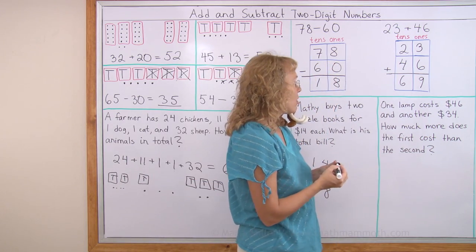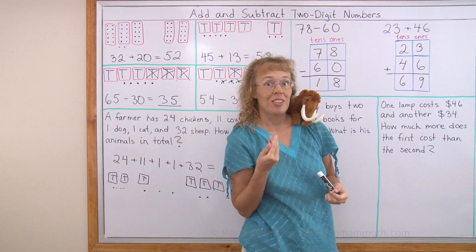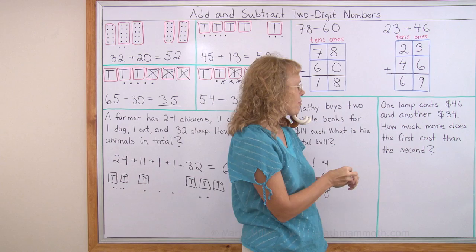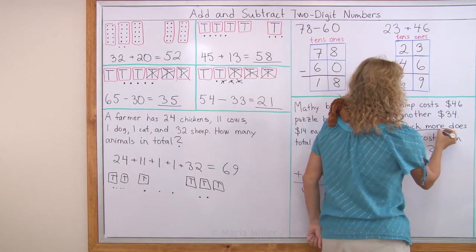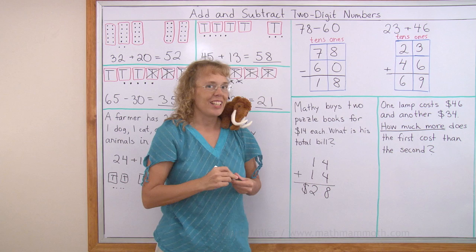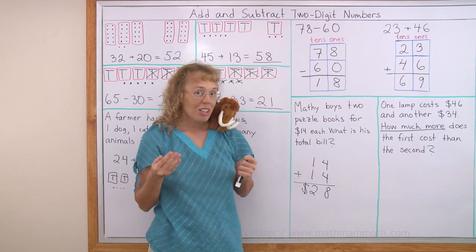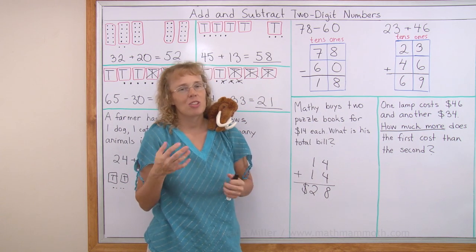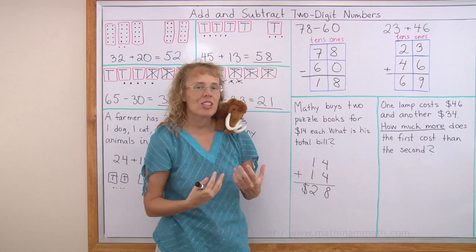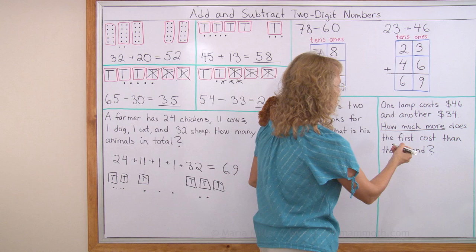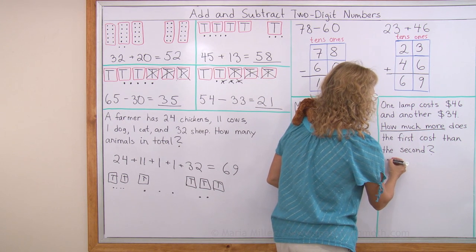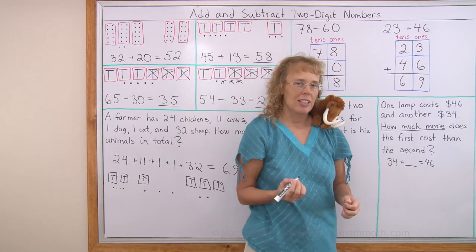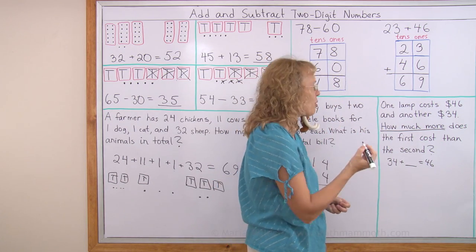One lamp costs $46. And another cost $34. How much more does the first cost than the second? Notice here these words. How much more? How much more is one thing than another? And we can solve that by writing how many more addition or we can subtract. So there's two ways to think about it. How many more addition or subtraction. I'll write the how many more addition here to just to remind you. It would be 34 plus how many more equals 46.